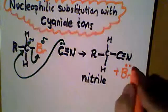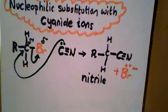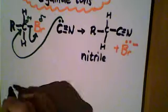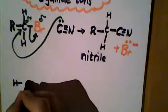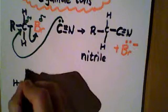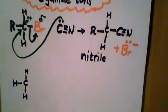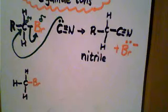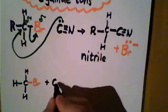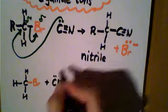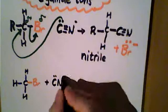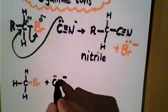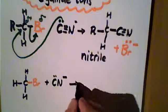If we look at a particular example, we'll use a very simple haloalkane - bromomethane. The bromomethane will be attacked by cyanide ions, and it's a substitution reaction as the bromine is substituted by the nucleophile.